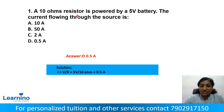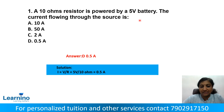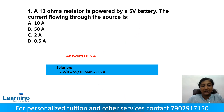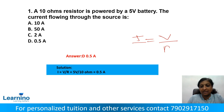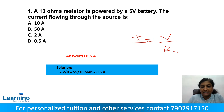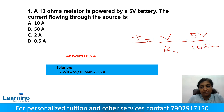Question number 1: A 10 ohm resistor is powered by a 5 volt battery. The current flowing through the circuit is? We take the basic equation: I equals V divided by R. Here voltage is 5 volts and resistance is 10 ohms. Dividing gives 0.5 amperes.